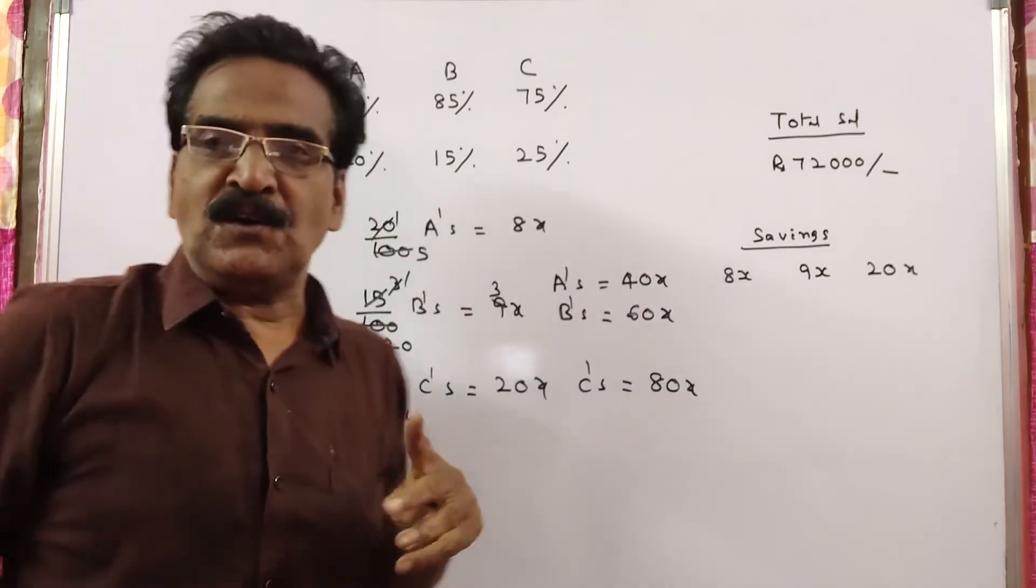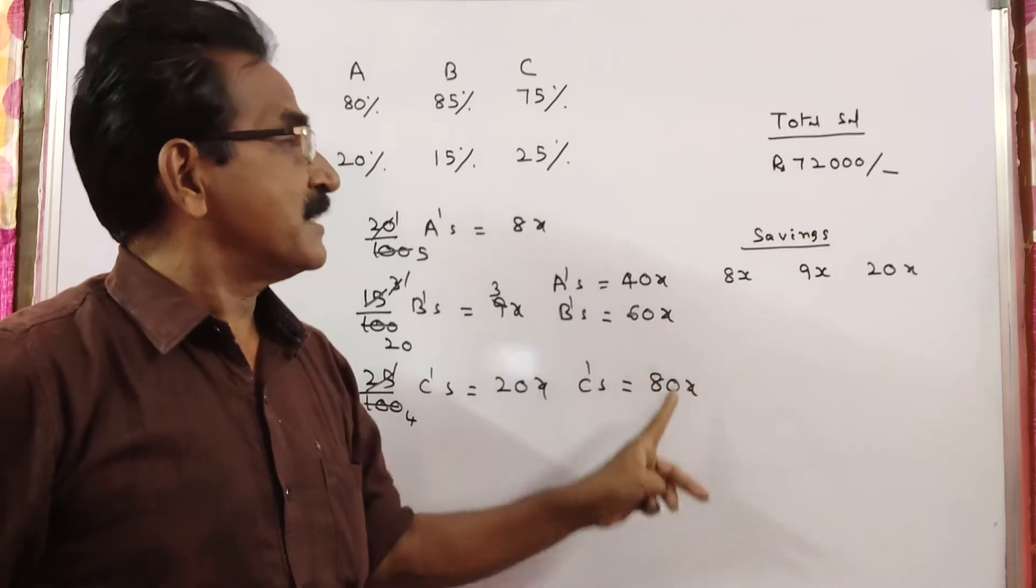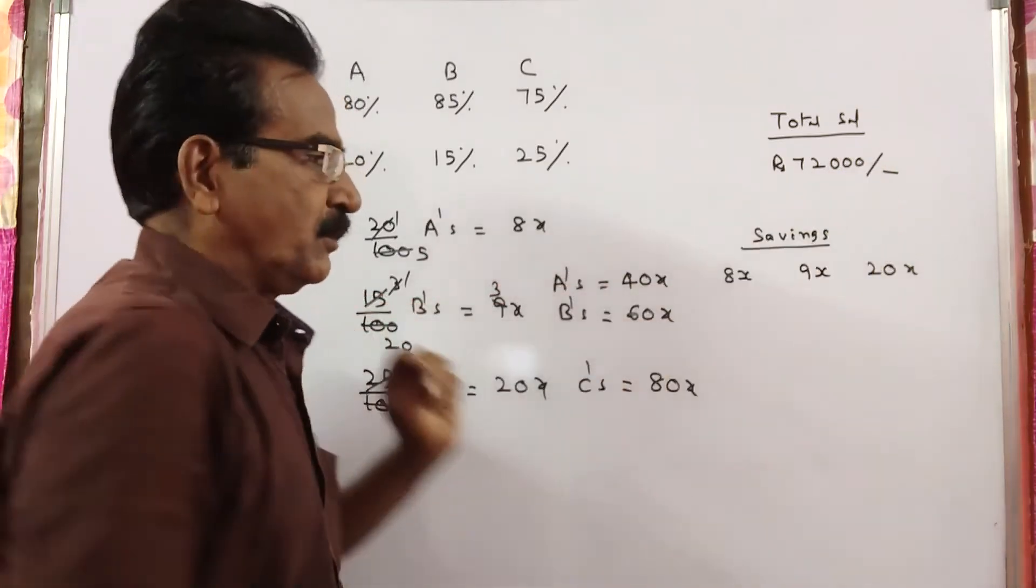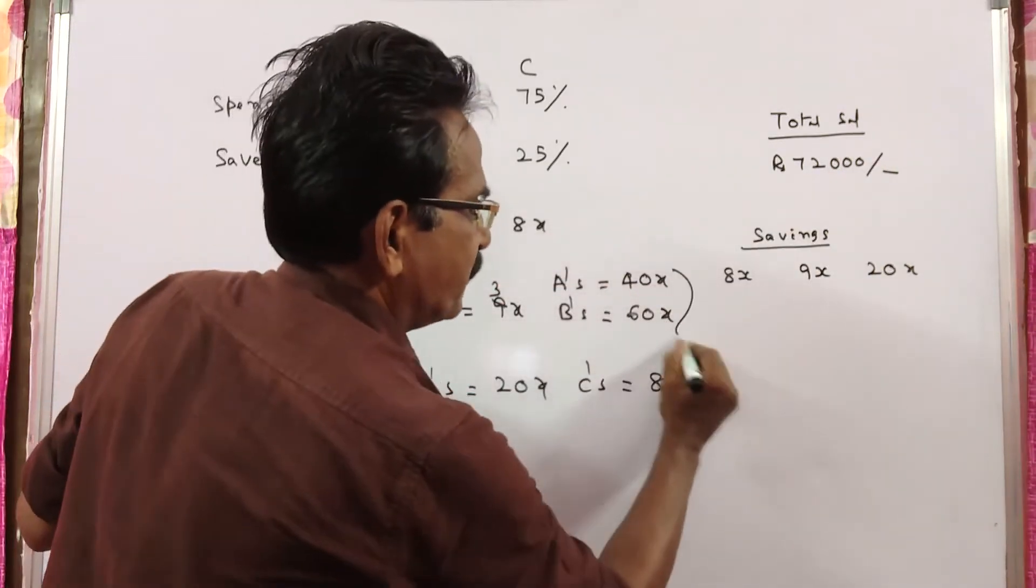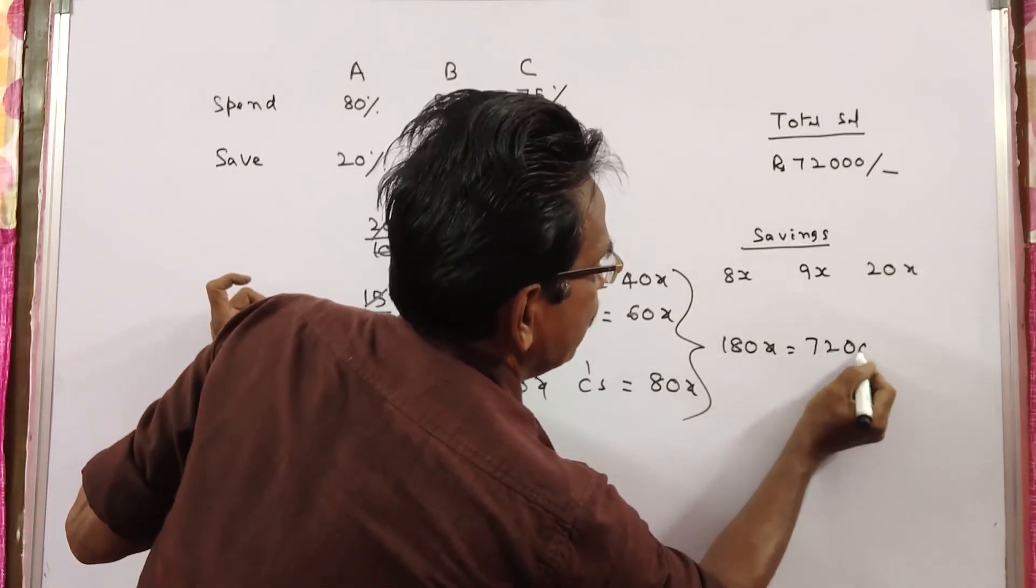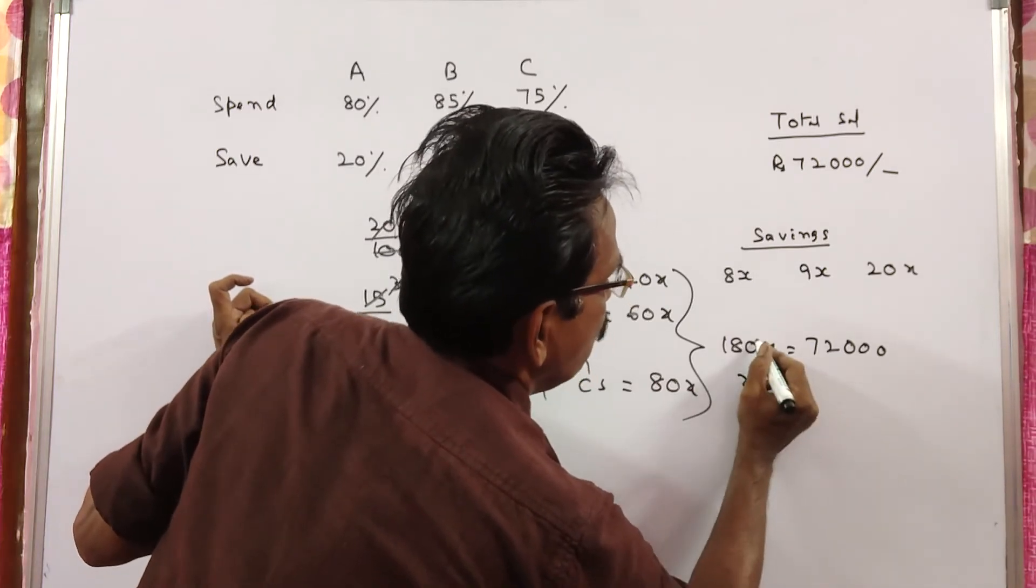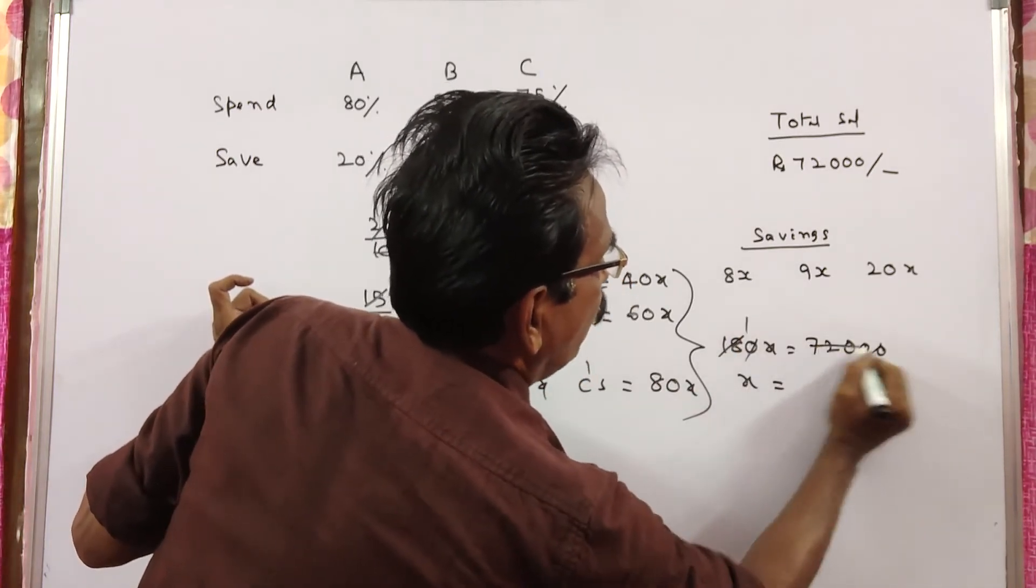Friends, now we know the salaries of A, B, C. So this plus this plus this is equal to 72,000. 180x is equal to 72,000. X is equal to 400.